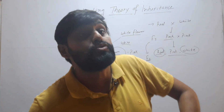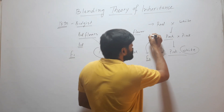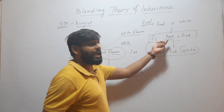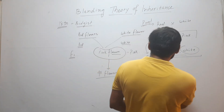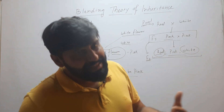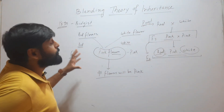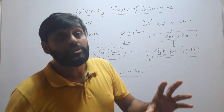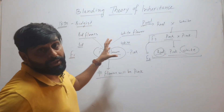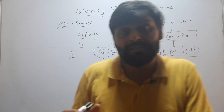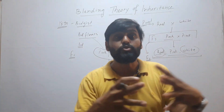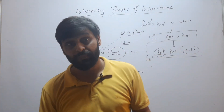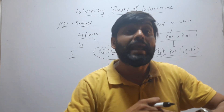This theory could not explain the reappearance of traits that were present in the parental generation, absent in F1, but appeared in F2. So this theory was later discarded. But in the 18th century, before Mendel, the theory of blending inheritance was very popular — even Charles Darwin was a supporter of this theory.